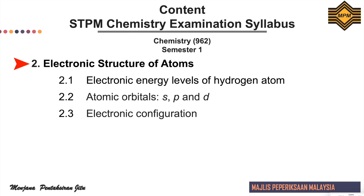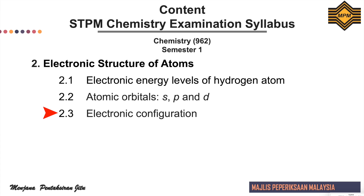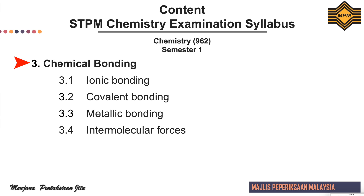Topic 2 is electronic structure of atoms. This topic has three subtopics: 2.1 electronic energy levels of hydrogen atom; 2.2 atomic orbitals S, P and D; and 2.3 electronic configuration.